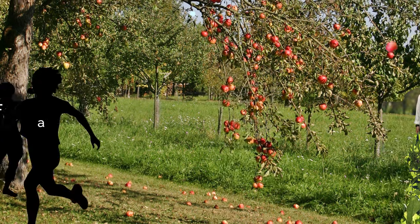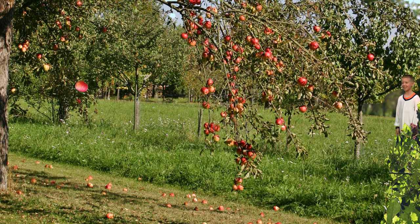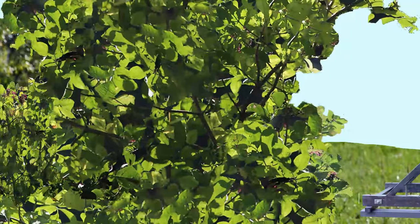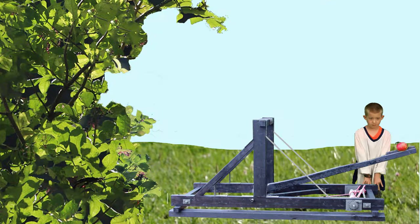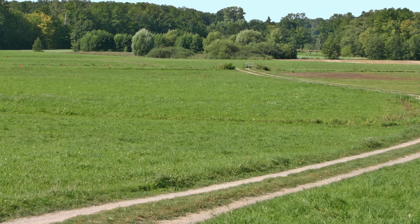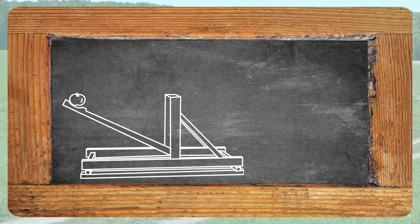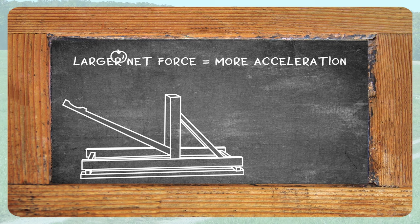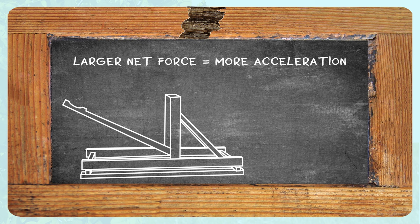If your little brother throws one apple in the orchard, it goes this far. If your little brother hauls in a catapult and uses it to throw the same apple, it leaves the orchard, crosses the road, and ends up in the neighbor's field. The catapult uses a much larger net force to apply more acceleration to the apple and send it flying much, much farther.